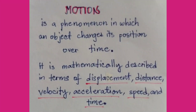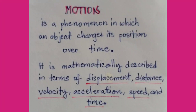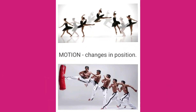Motion is a phenomenon in which an object changes its position over time. Once you change your position, it is already considered as motion. Motion is mathematically described in terms of displacement, distance, velocity, acceleration, speed, and time. In short, motion is a change in position.